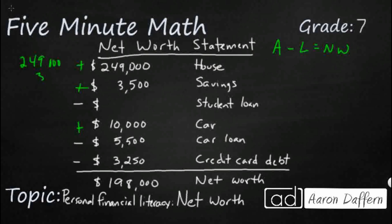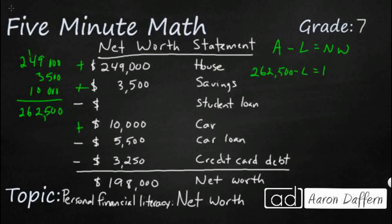Our house is $249,000, our savings is $3,500, and our car is worth $10,000. So if we add these up, our total assets are $262,500. And they already give us our net worth, so we need $262,500 minus our liabilities to equal $198,000. That's pretty easy — let's subtract. Our total liabilities need to be $64,500.